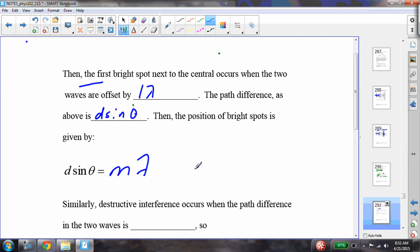This is the path length difference is equal to some integer m, which is zero for the central bright spot, one for the first, two for the second, three, and on and on. It doesn't go to infinity, but it goes on until the bright spots run out. We will come back to this and talk about destructive interference in just a minute.